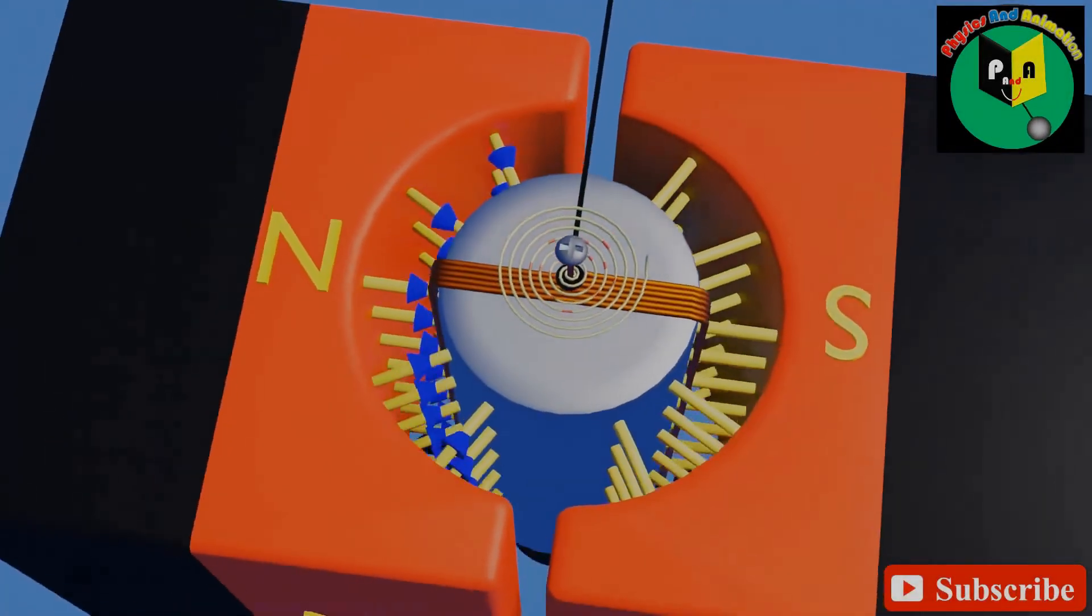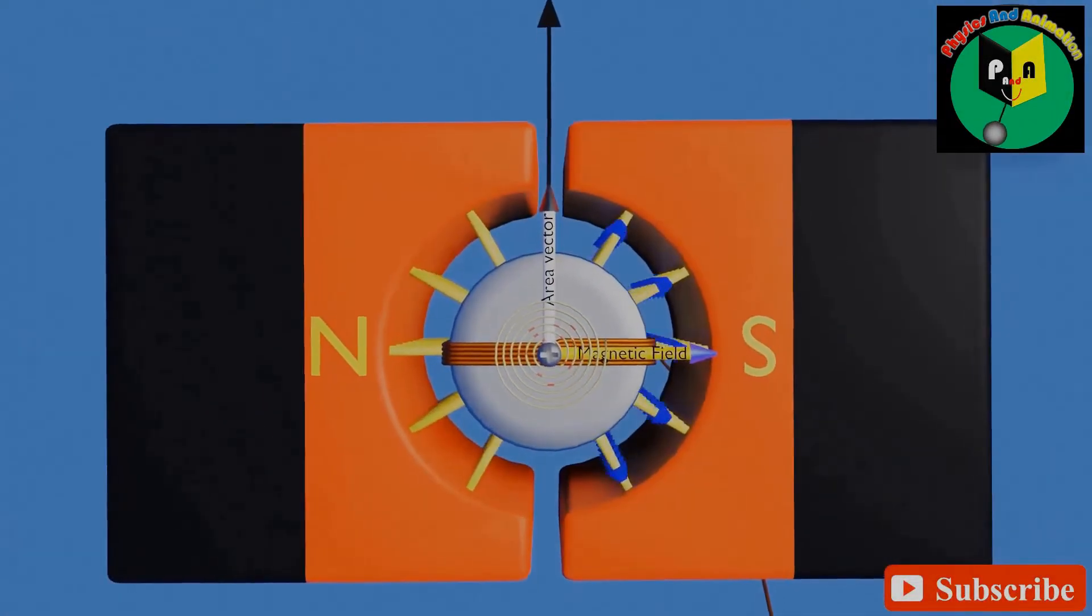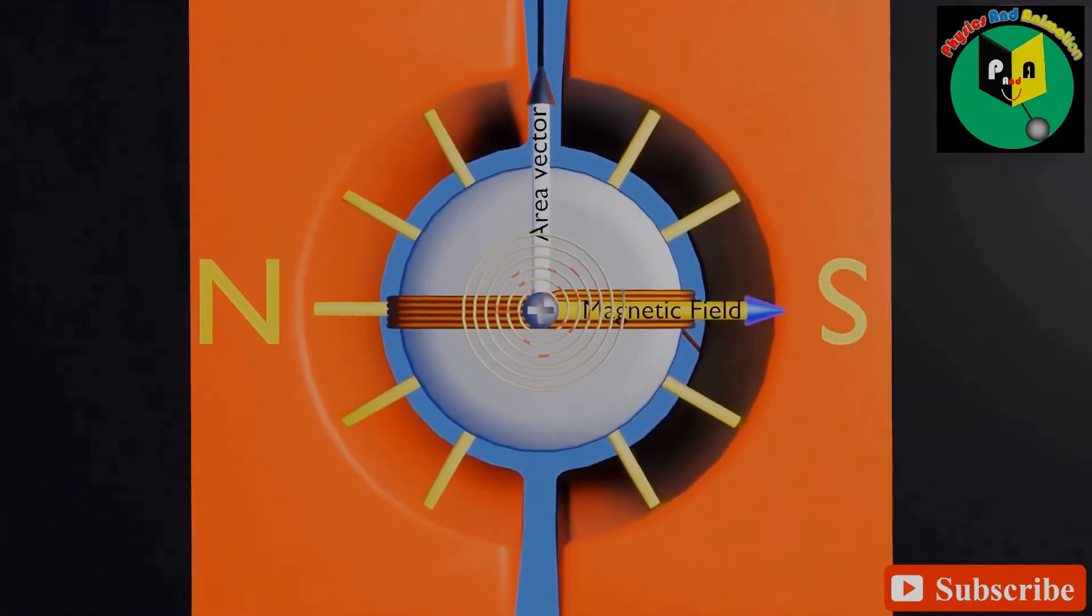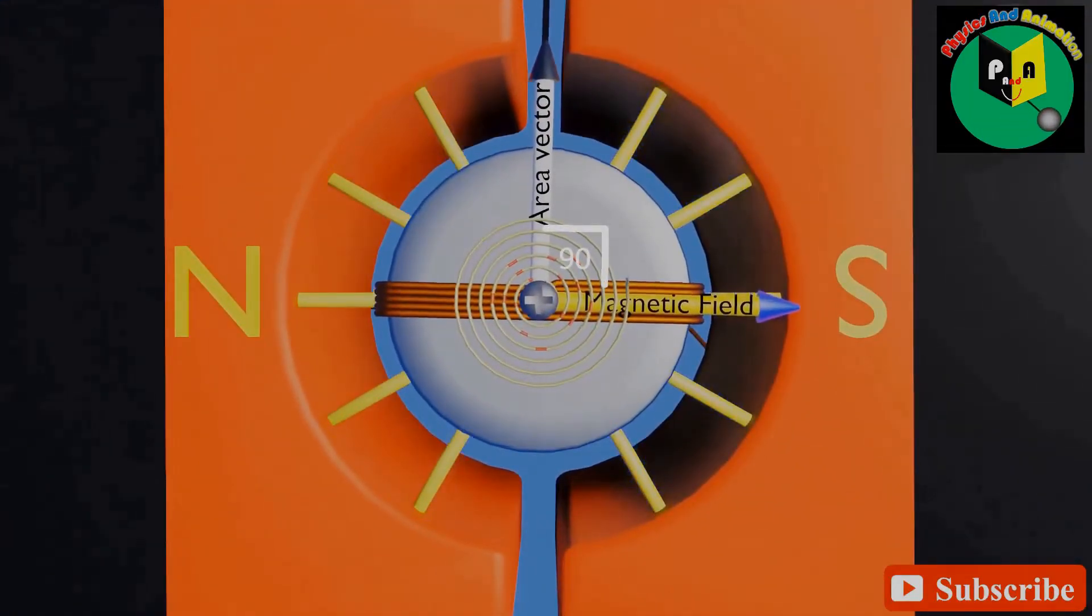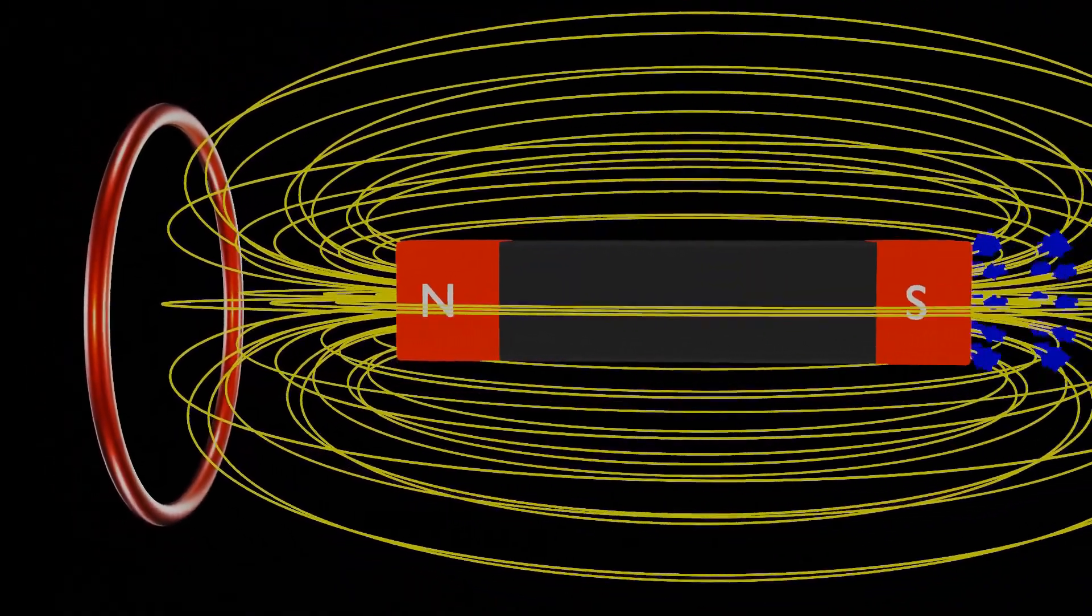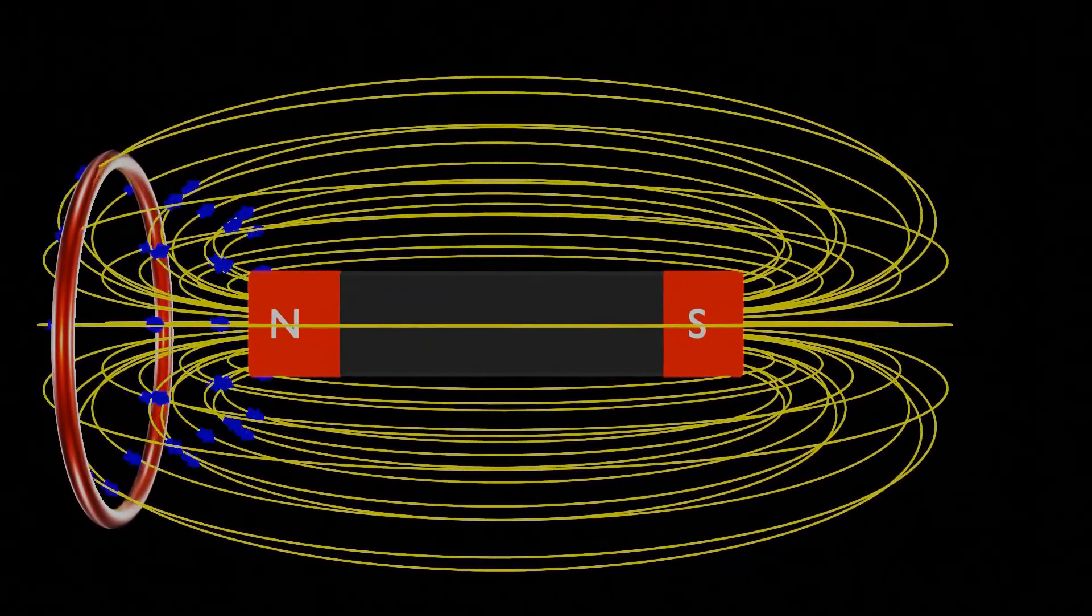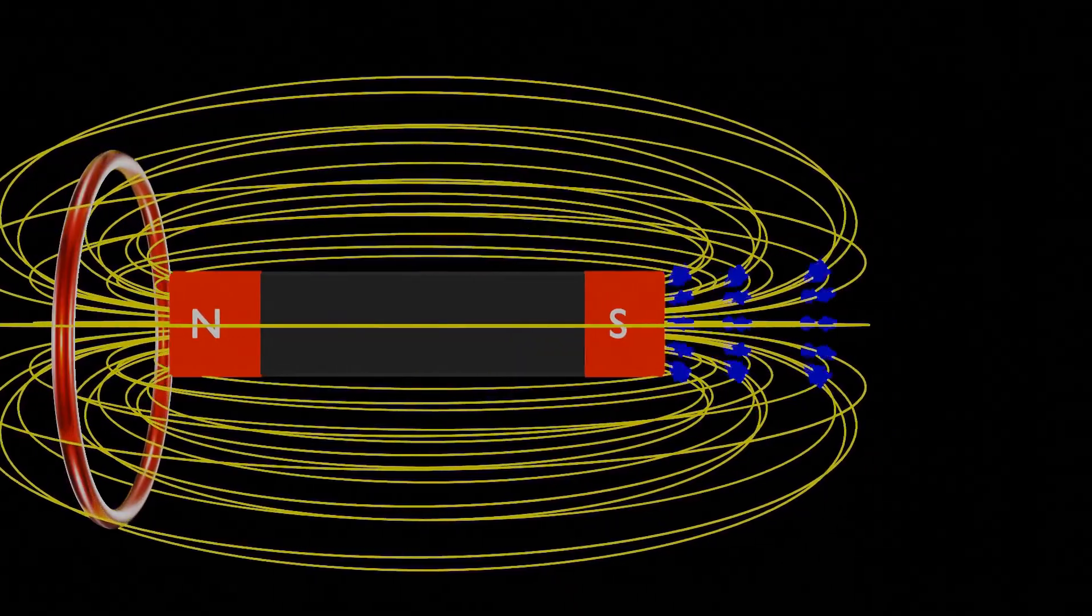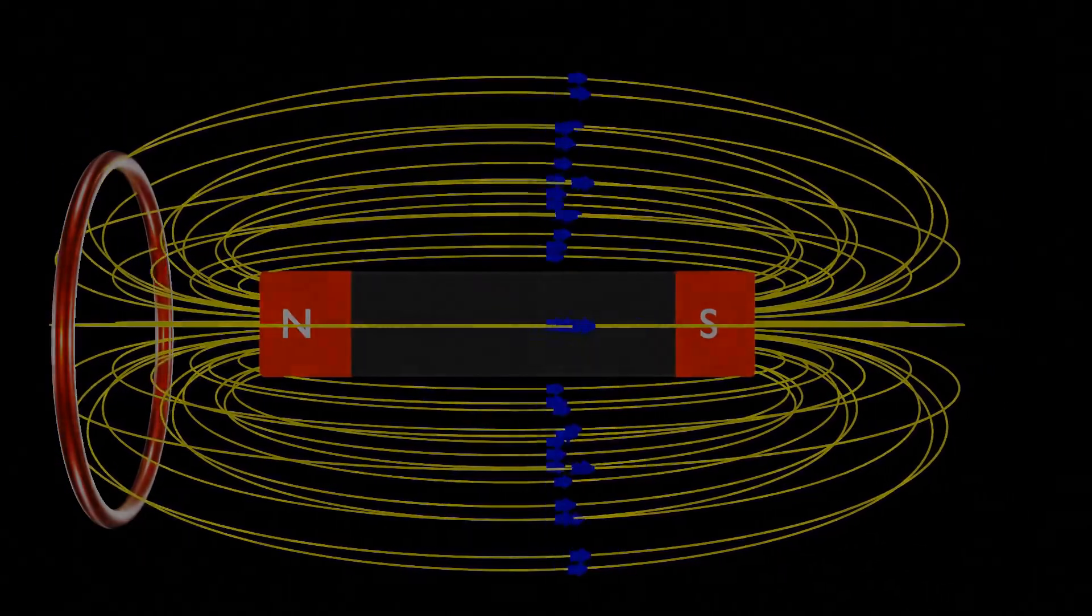Welcome to Physics and Animation. From today's video we will start Twelfth Physics fully animated course series. In this course we will explain each concept, derivation and theory of physics with animation and visuals. We will try our best that this series will clear all your conceptual doubts and prove to be the best for twelfth class students. In today's episode we will start with the first chapter, Electric Charges and Field in the first unit Electrostatics.